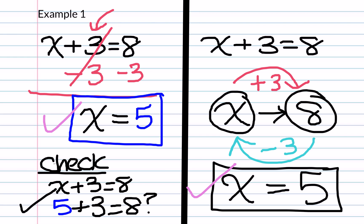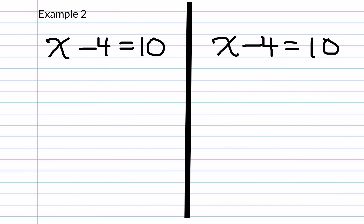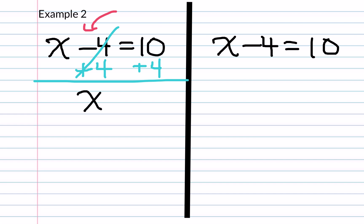Now let's move on to example number 2. In this case, the operation attached to our x is in fact a minus. The inverse operation of subtraction is addition, so we're going to add 4 to both sides, because our goal is always to get our variable x by itself. When we do minus 4 plus 4, those cancel out to give 0. We bring down our x, keep the equal sign, and then do 10 plus 4, which is 14. So our final answer is x equals 14.